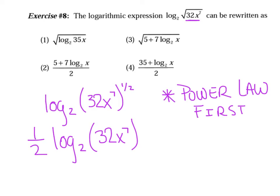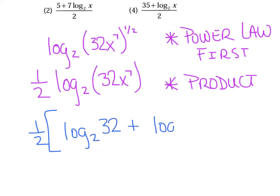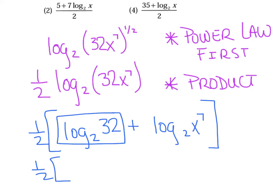So the one half stays out front, and now I say log base 2 of 32 plus log base 2 of x to the seventh. You can use square brackets or regular parentheses. The last thing I'm going to do is evaluate the first term: 2 raised to the fifth power equals 32. Then I use the power law one more time where the 7 comes down as a coefficient. That matches number two perfectly.